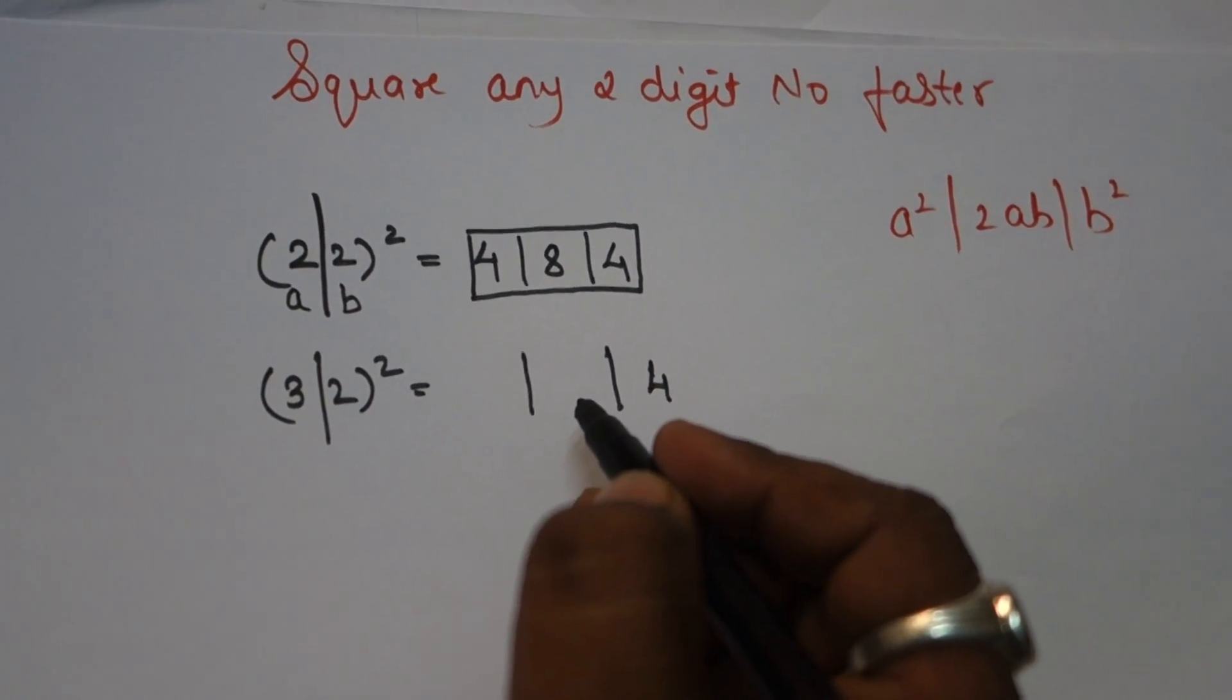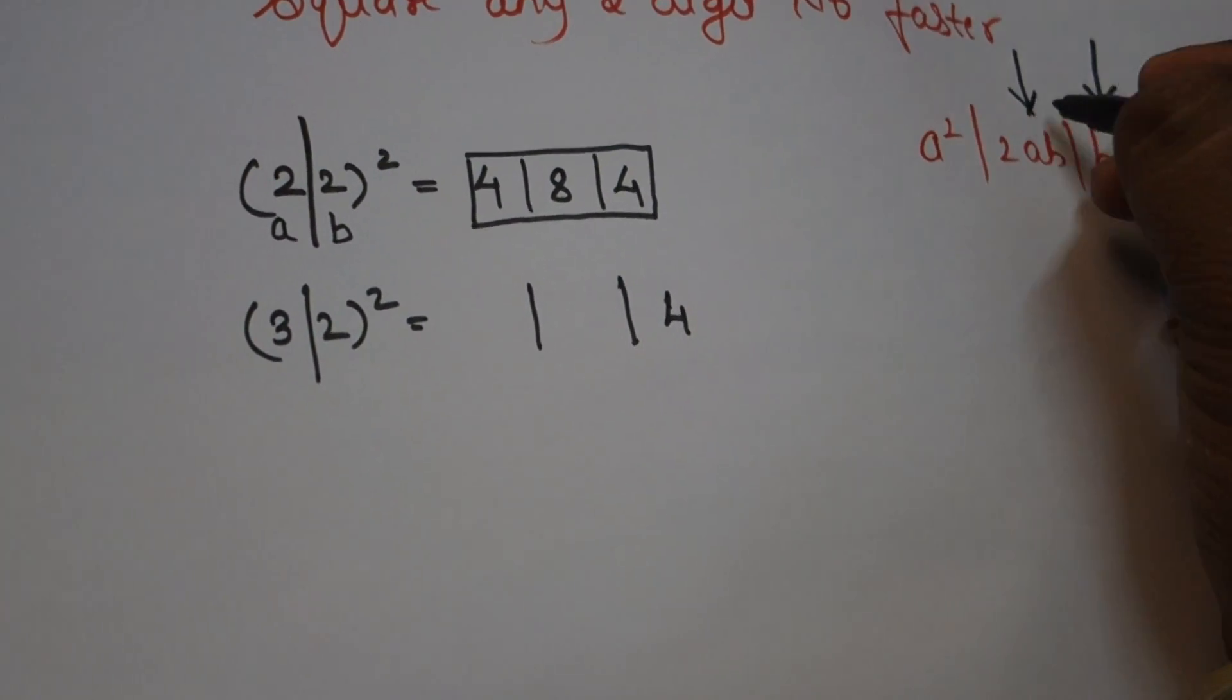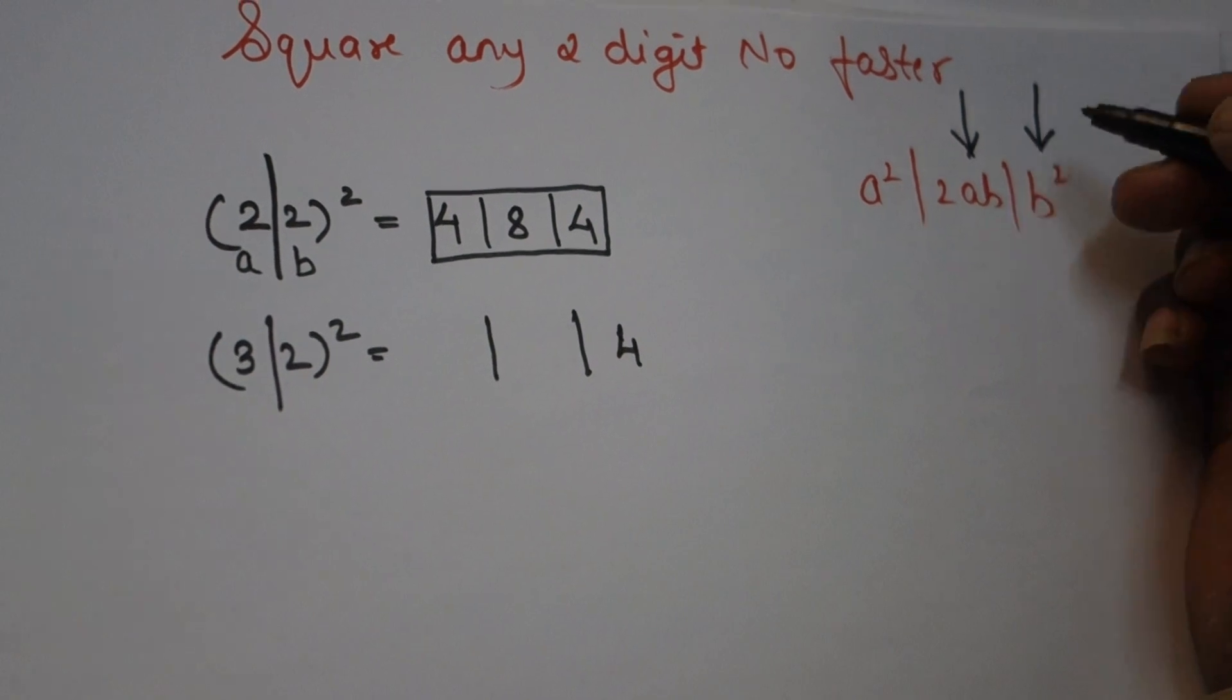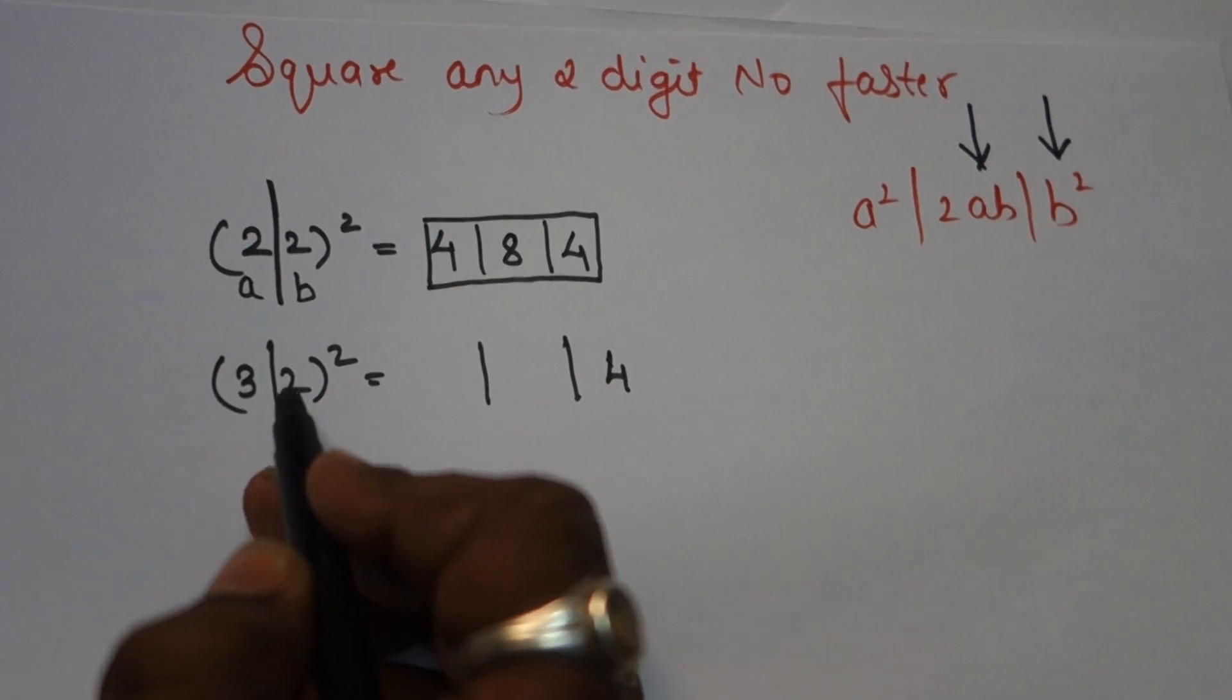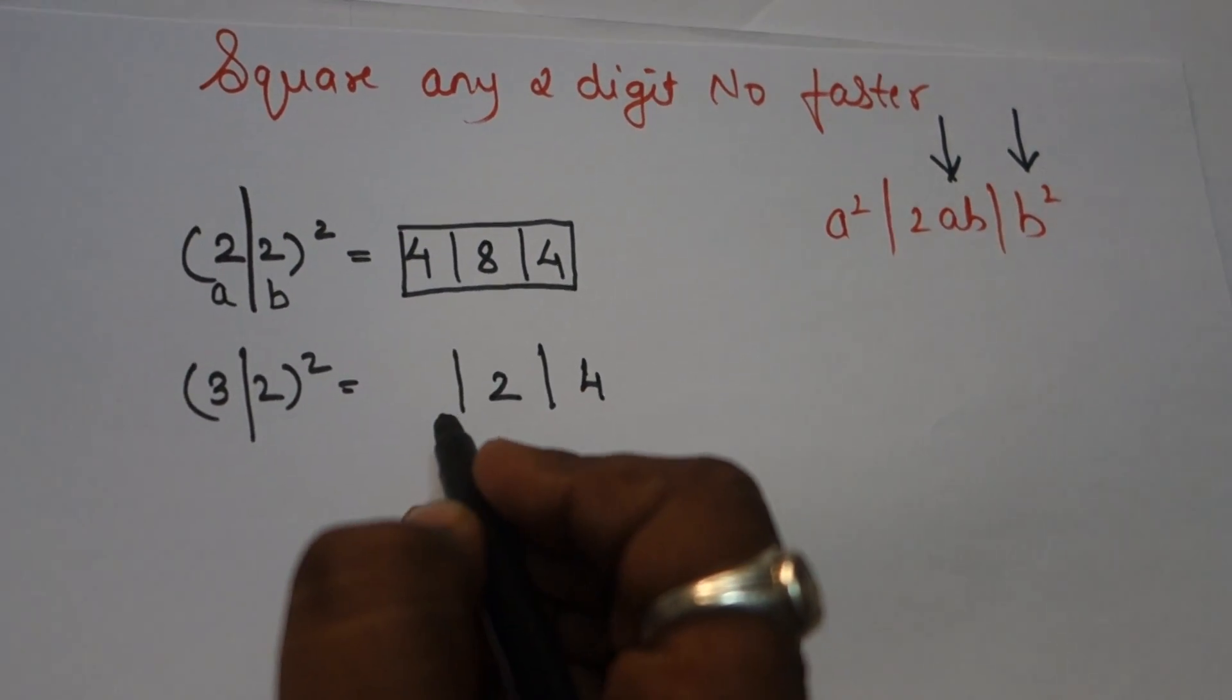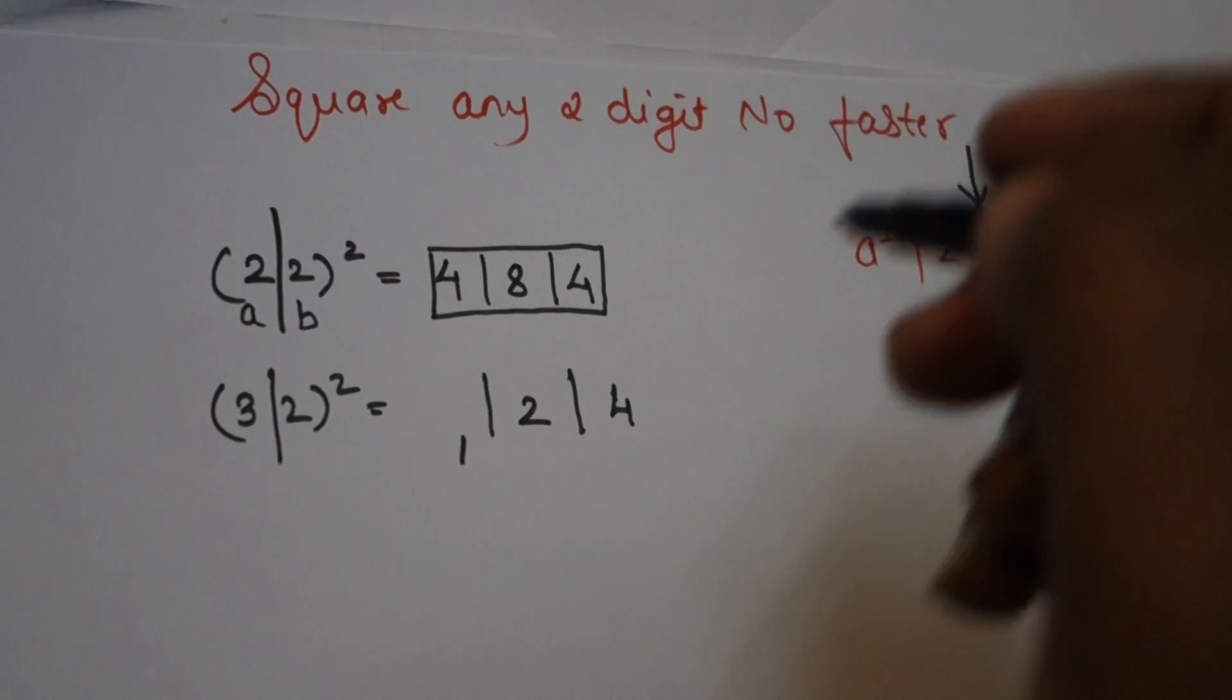I cannot write 12 directly. Keep in mind: whenever you are finding b² and 2ab, consider only the unit place. Since 2ab gives 12, a two-digit number, I will take only the unit place, 2, and carry forward 1.